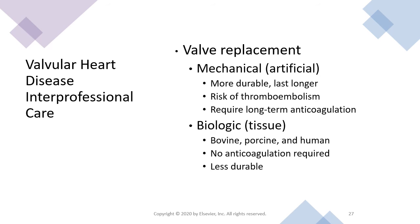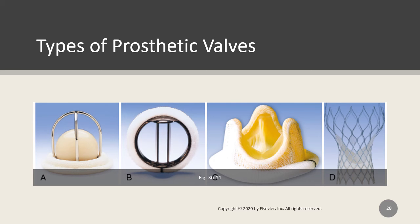Biological valves usually contain some human-made materials. A decellularizing process removes the cadaver cells from the valve to lower the risk of tissue rejection. Biologic valves produce a more natural pattern of blood flow compared with mechanical valves. Mechanical valves are more durable and last longer, but they have an increased risk for thromboembolism, requiring long-term anticoagulation therapy, which increases the risk of bleeding. Anticoagulation therapy is not needed for biological valves because of their low thrombogenicity; however, they are less durable and tend to cause early calcification, tissue degeneration, and stiffening of the leaflets. Both valve types are subject to leaking and risk for infective endocarditis.